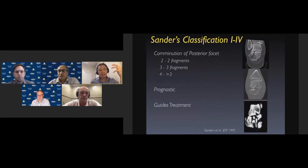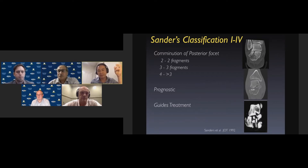The Sanders classification is the most common classification used, and it is basically a reflection of how comminuted the subtalar facet is. Sanders 2 contains two fragments, Sanders 3 contains three. It stands to reason that the more comminuted the subtalar facet, the more guarded the prognosis, and that has implications for treatment.